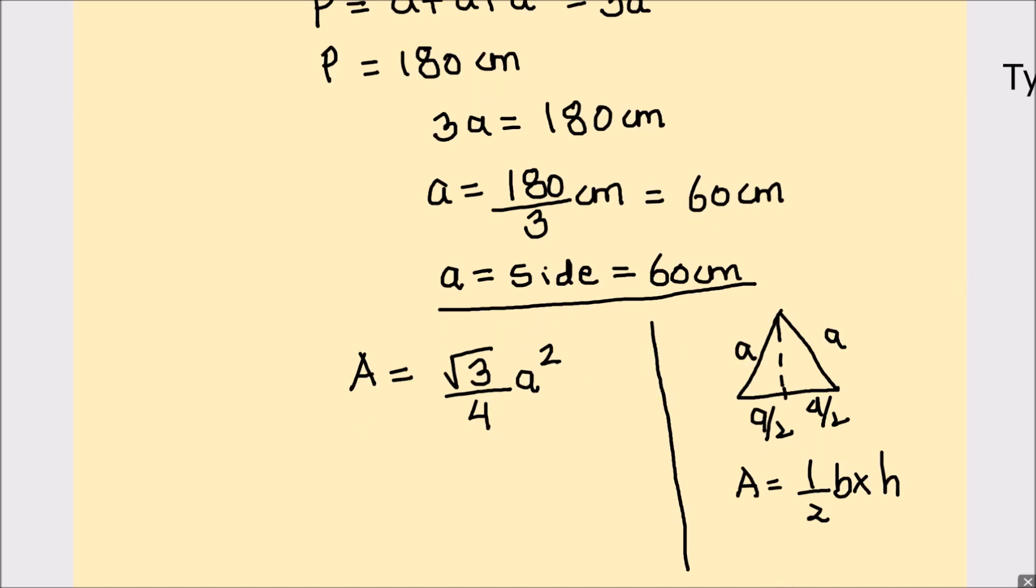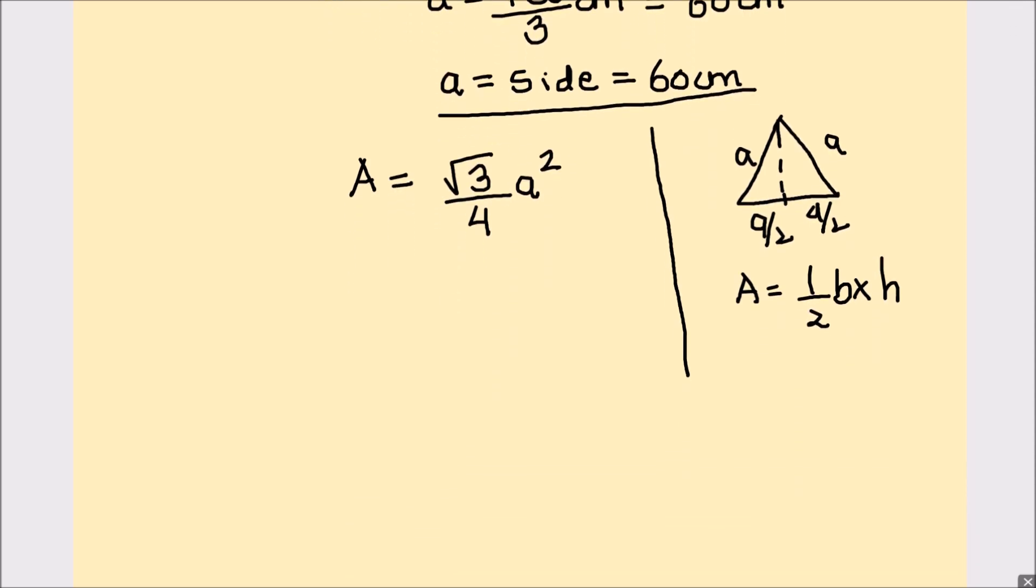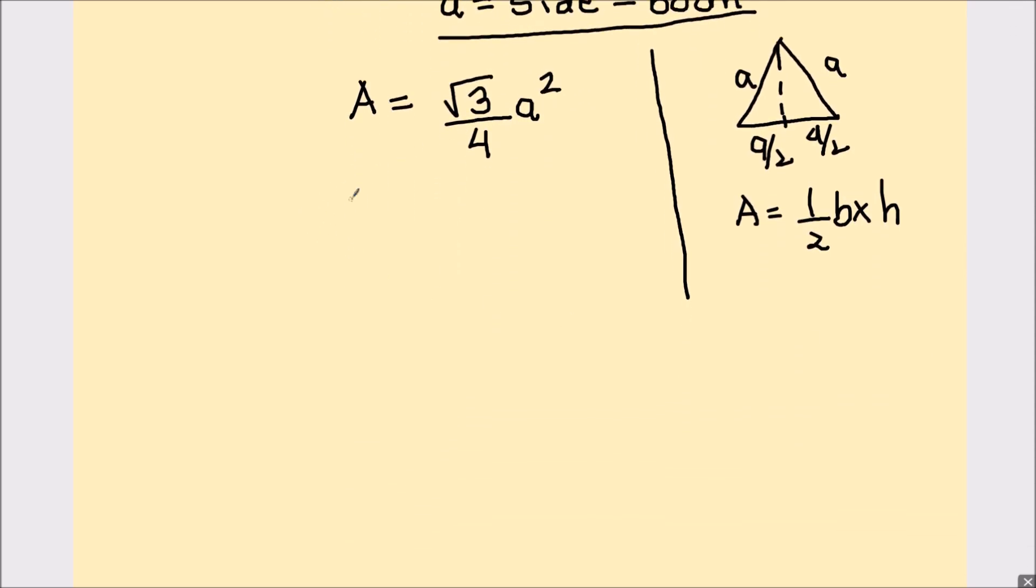So we'll get the area of the equilateral triangle as root 3 by 4 a squared. From this formula we can find the area which is root 3 by 4 a squared is 60 squared because a is 60 centimeters. So that's going to be root 3 by 4 times 60 times 60.